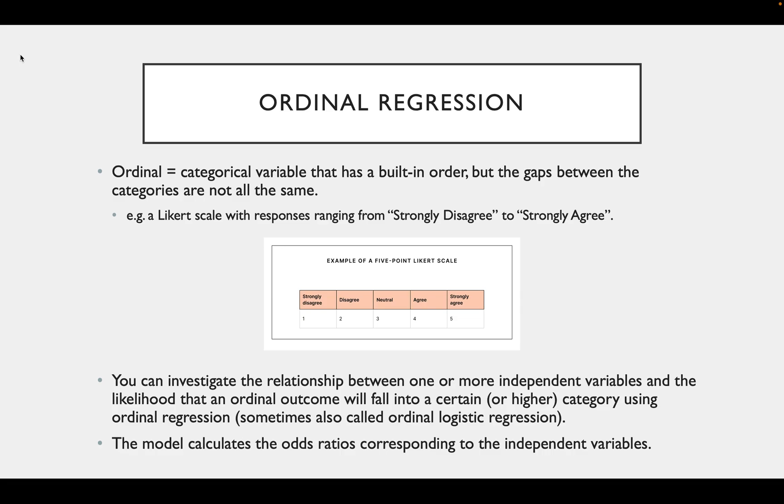Ordinal data is when you have a categorical variable that has a built-in order, but the gaps between these categories are not the same. For example, if you use a Likert scale where the responses range from strongly disagree to strongly agree, you can see here that it has a clear order, but the differences between each response is not the same.